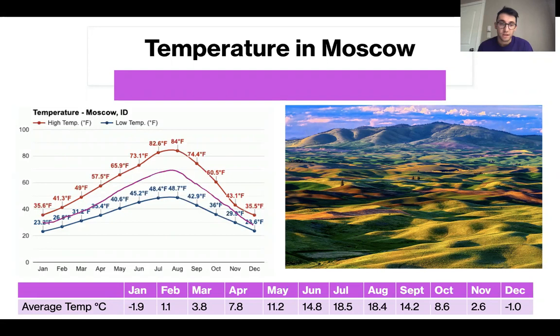As you can see, Moscow follows a pretty nice trend where winter months are cold and summer months are warm.